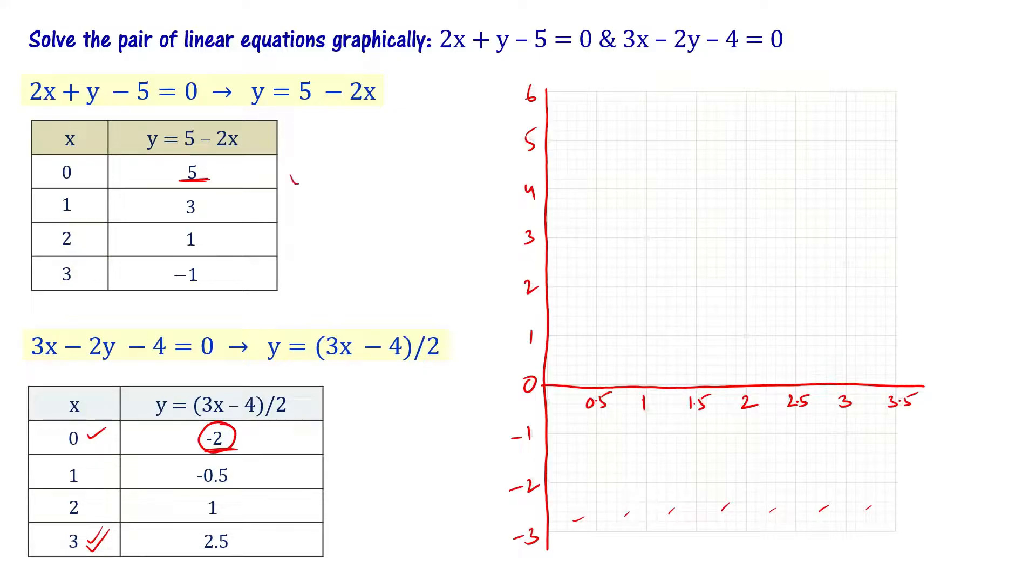Let's start with first equation data: x = 0, y = 5; x = 1, y = 3; x = 2, y = 1; x = 3, y = -1. Let me draw a straight line passing through all these points.